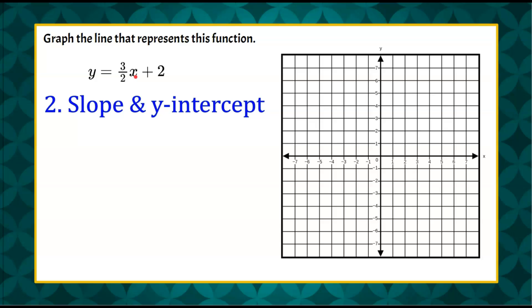So I can see that this function is written in what we call slope-intercept form, where m represents the slope, and in here the slope is 3 halves, our rate of change, and then we have our y-intercept, which is right here, and the sign that comes before tells us if it's positive or negative.